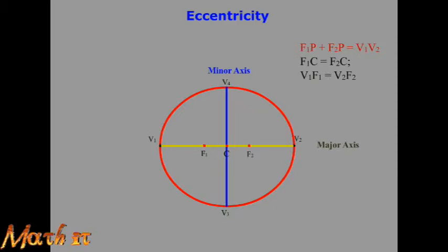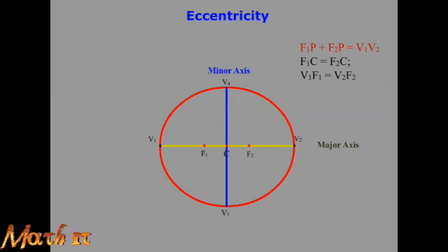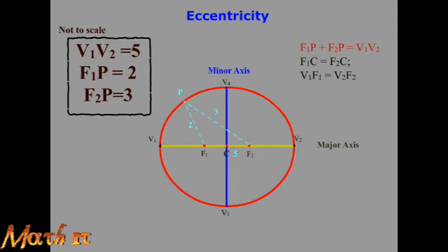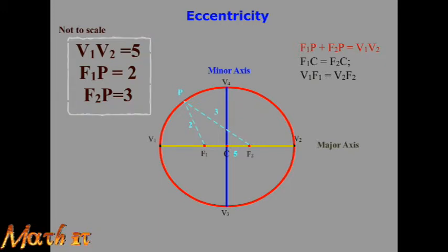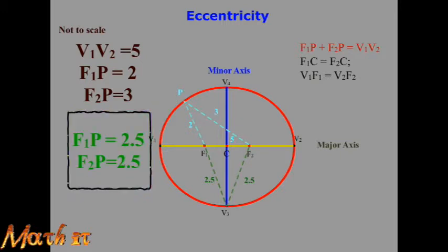We will see the ellipse property: F1P plus F2P is always equal to V1V2. For example, suppose V1V2 is 5 units, F1P is 2 units, and F2P is 3 units. Also, the distance F1V3 equals F2V3, which is 2.5 units — each focus is 2.5 units from the center vertex.